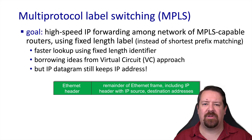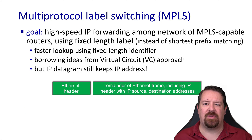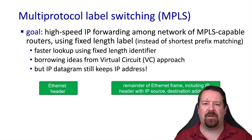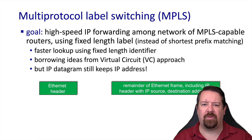MPLS is sometimes referred to as layer 2.5 because it adds a shim header in between the layer 2 header and the layer 3 IP header. It uses this to insert a fixed length identifier, which it uses to forward packets on a pre-configured path through the network instead of having to do longest prefix matching at every hop along the way. This borrows some ideas from the virtual circuit approach in that the path through the MPLS network is pre-configured and then used for many many packets.